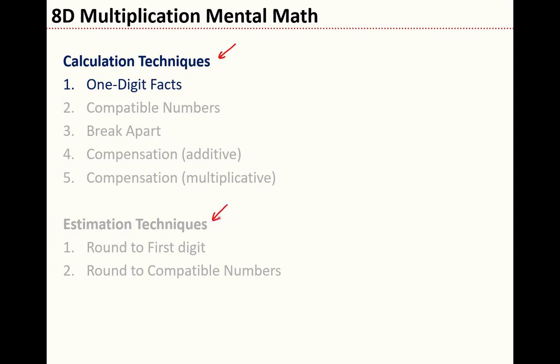The very first calculation technique I want to talk about is the one-digit facts. It's not really a technique so much as it is a chance for me to emphasize how important it is to know your one-digit facts. 5 times 7 is 35, 8 times 9 equals 72, and all the others.